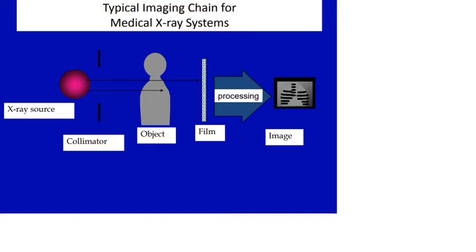The X-ray penetrates through the body — referred to as the object — and falls on an X-ray film. This film captures important information, which is then processed and displayed as an image. This is the overall view of a medical X-ray system.